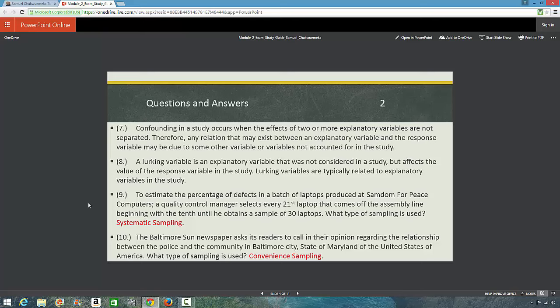Confounding in a study means when the effects of two or more explanatory variables are not separated. So, any relation that may exist between the explanatory variable and the response variable might be due to some other variables not accounted for in the study. And we say that a lurking variable is an explanatory variable that was not considered in the study, but it affects the value of the response variable in the study. Lurking variables are typically related to explanatory variables in the study. Please, we talked about this in Introduction to Statistics. You need to view that video, please. About variables. Explanatory variables, response variables, and the rest of them.